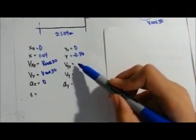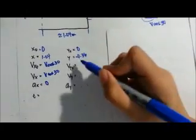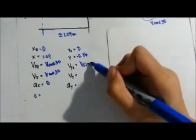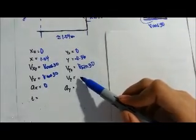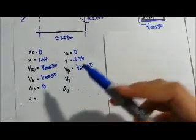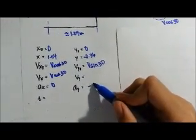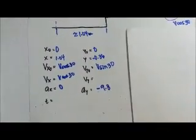And our initial velocity for the y-axis is v sine of 30. But we don't know the final velocity. And the acceleration would be -9.8 because of gravity.